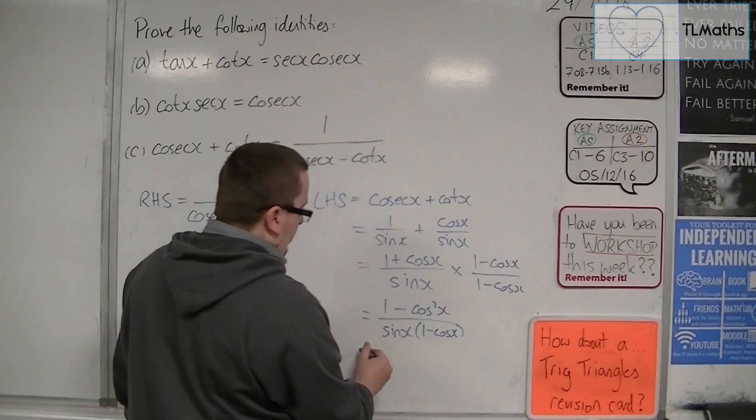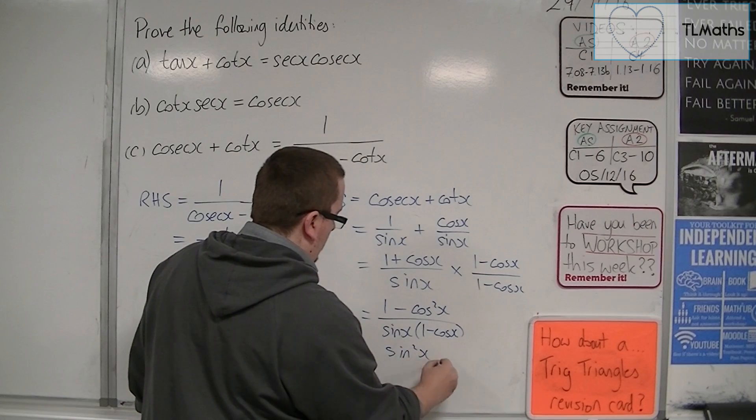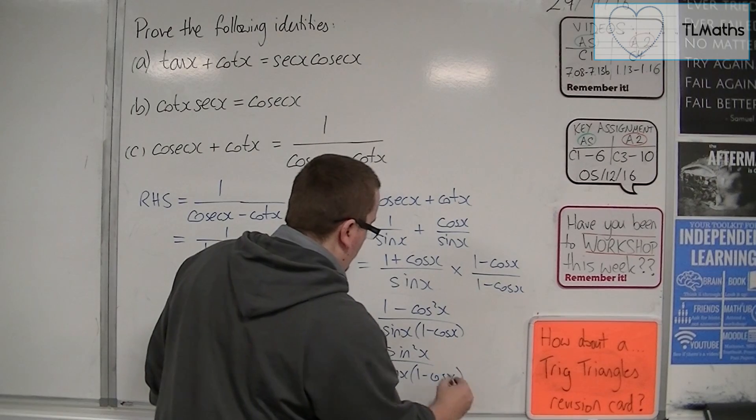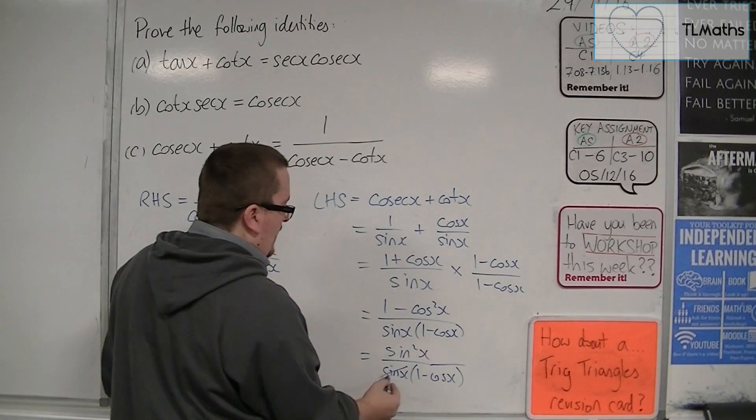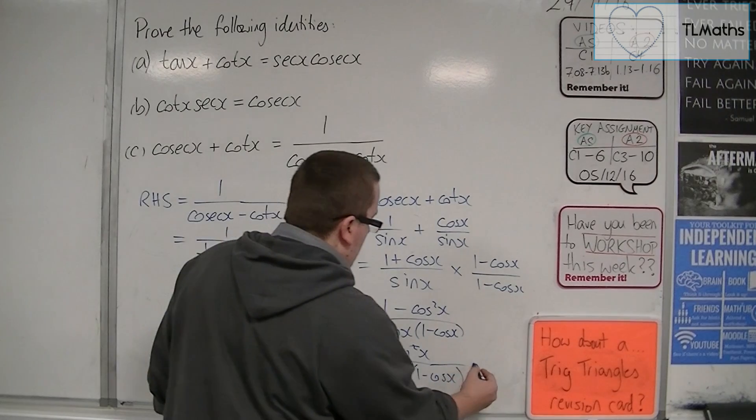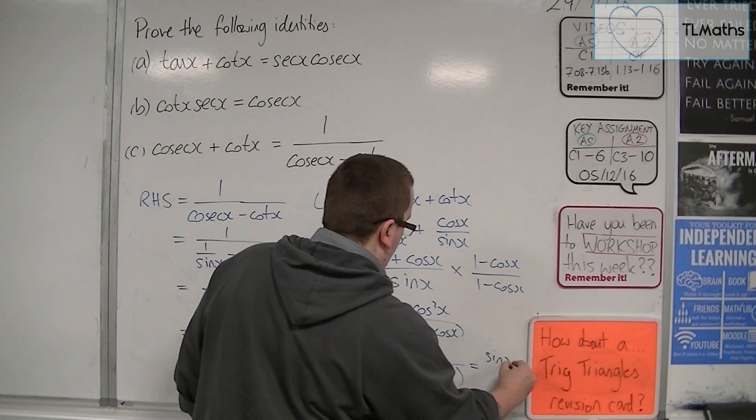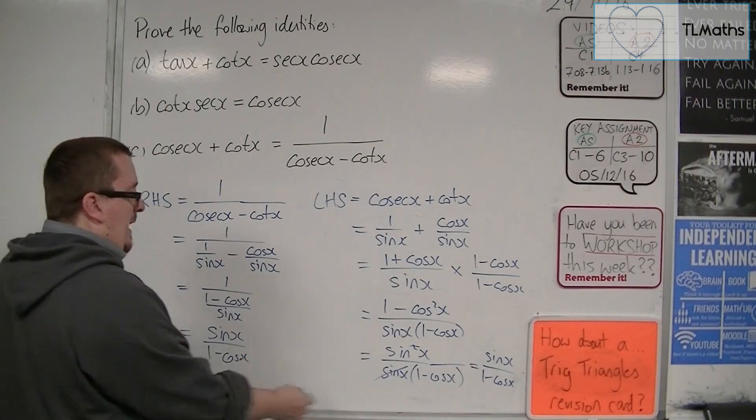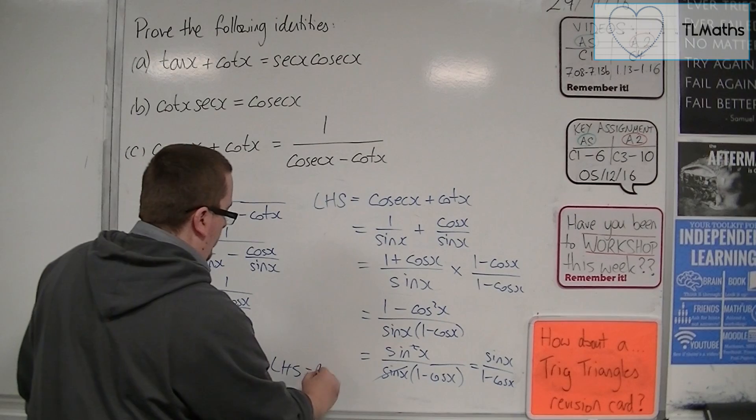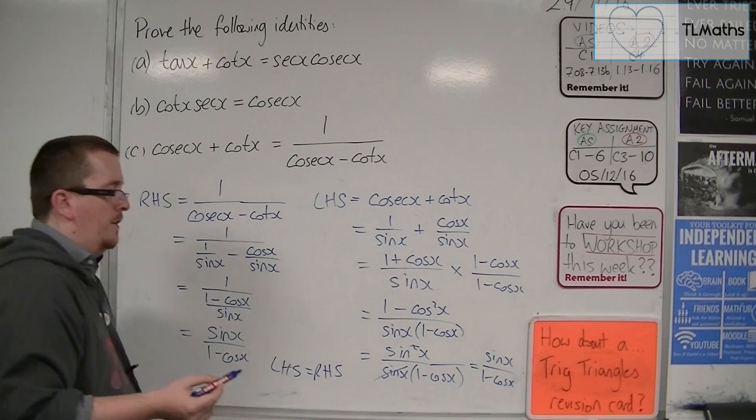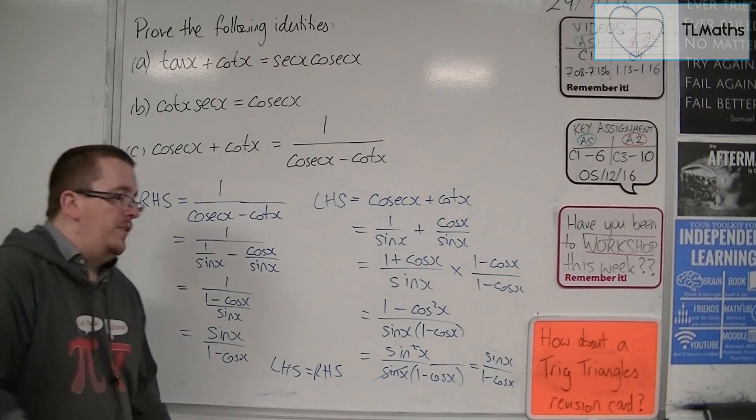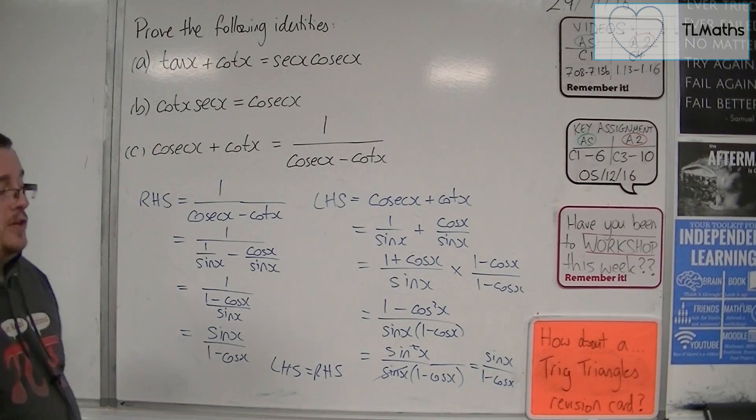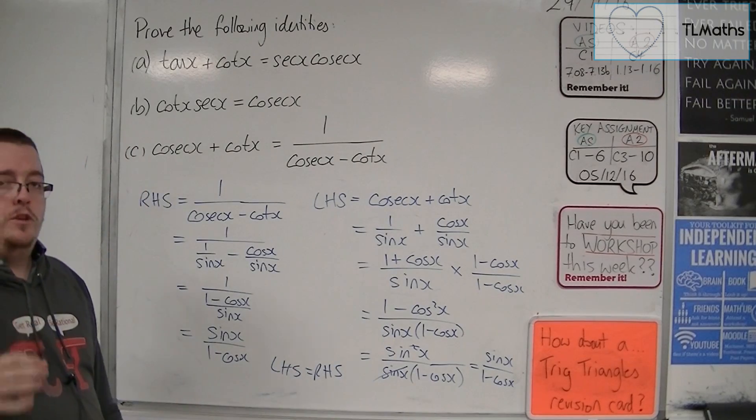1 minus cos squared is sine squared. Perhaps you can see where this is going. Because now a sine x can be cancelled from top and bottom, leaving me with sine x over 1 minus cos x. And there we have that the left-hand side equals the right-hand side. As you can see, this was a much longer problem than either of the other two. But this isn't the only way that you could have done it.